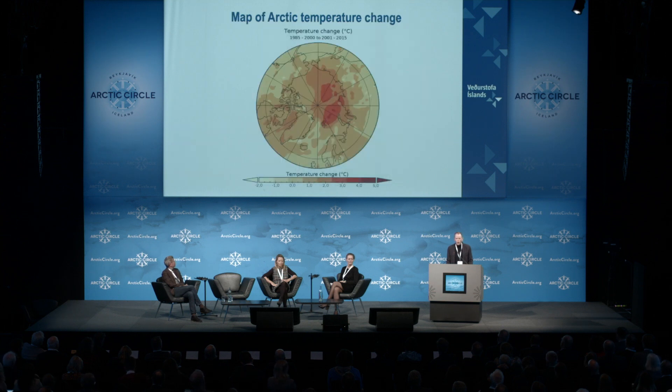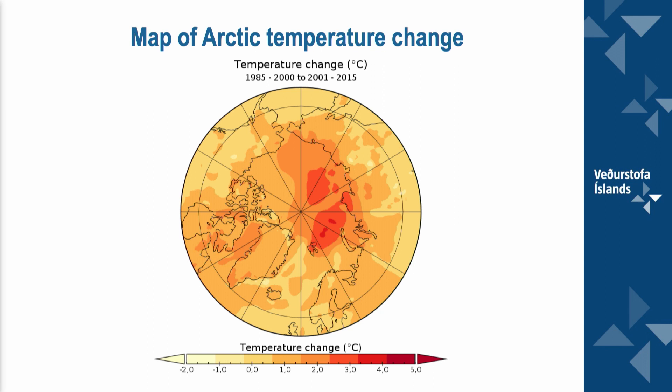If we want to know what the Arctic amplification looks like spatially, we can take the average temperature of the Arctic before the millennium and after the millennium and simply take the difference. This map shows that the yellow color indicates all regions have been warming. The reddish areas tell you which regions have been warming most — those are north of Novaya Zemlya and north of the Laptev Sea Basin.